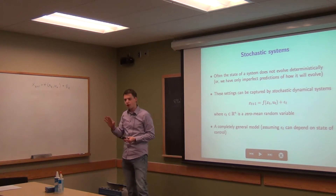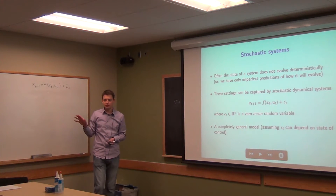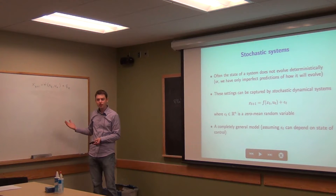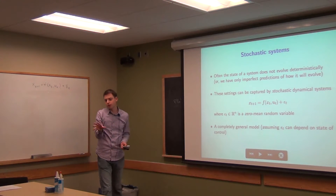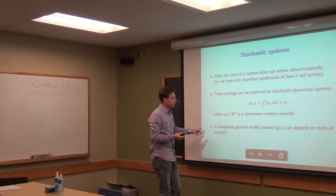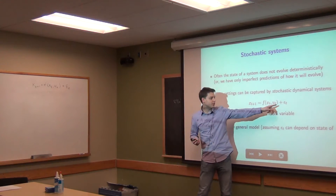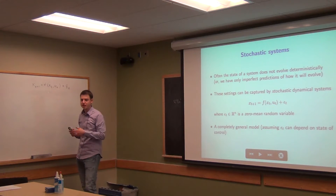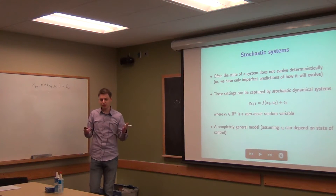This is a very general model. If the mean is not zero, we should just include that bias in the dynamics itself. The noise term has to be zero mean, but it can capture really any arbitrary type of noise in the system. If epsilon_t can depend on both the state and control, this is an extremely general model — we're not saying anything about the distribution, just that this is some zero-mean random variable that captures the noise. Broadly speaking, this is a stochastic system.